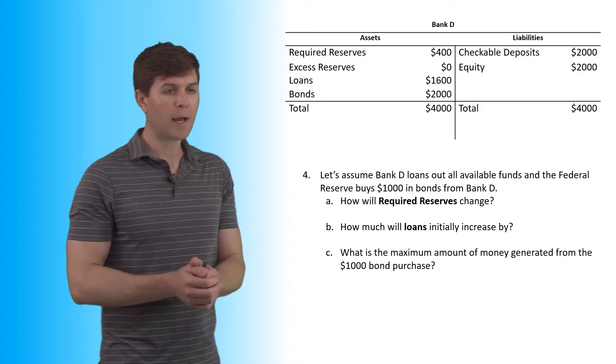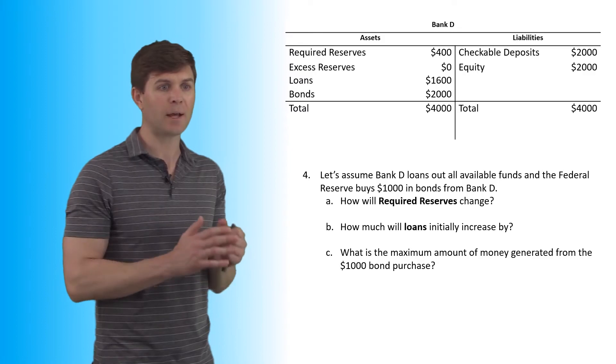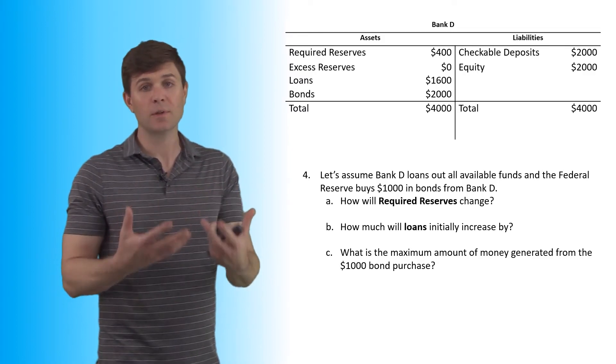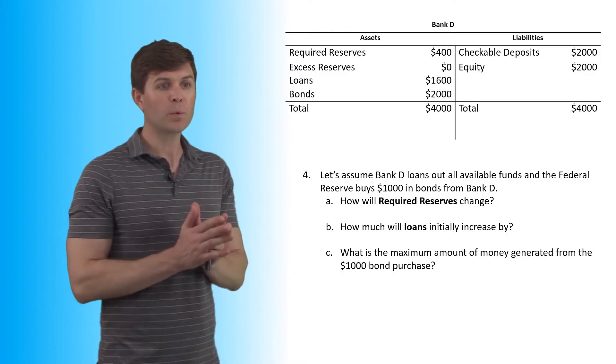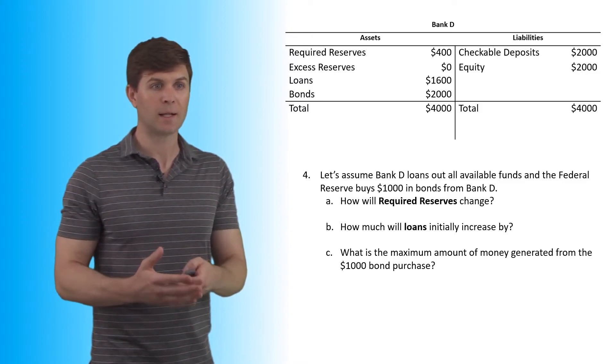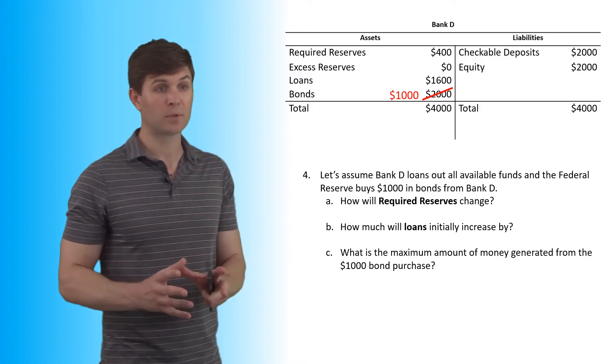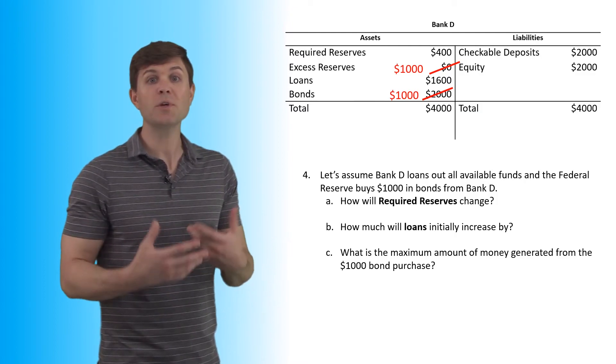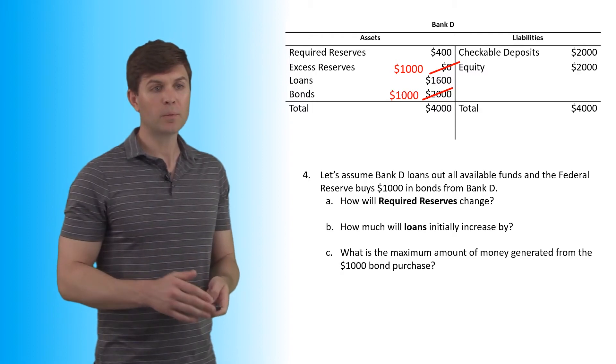All right, last one, number four, let's assume Bank D loans out all available funds and the Federal Reserve buys $1,000 in bonds from Bank D. So it's saying that the assumption is this bank is going to loan out anything that it has. So how will required reserves change for Bank D when the Federal Reserve buys $1,000 in bonds? So the first thing, instead of having $2,000 worth of bonds, the bank's only going to have $1,000. In addition, there's going to be $1,000 in excess reserves. We know they're going to loan it out, but we're going to put it on the column like this.